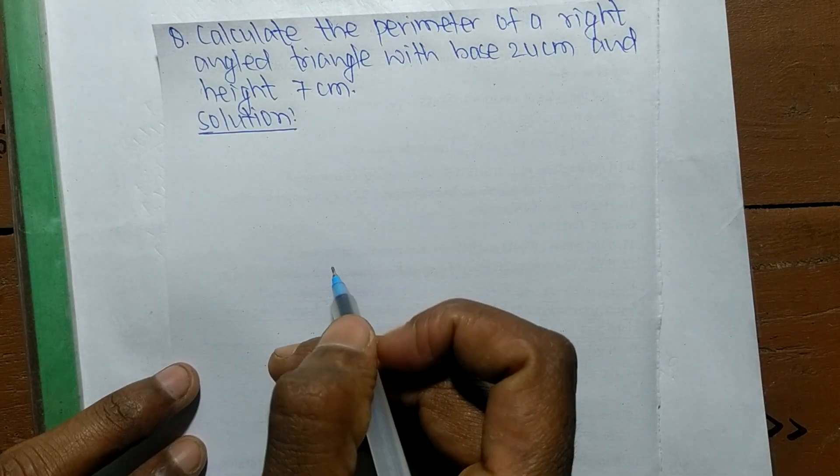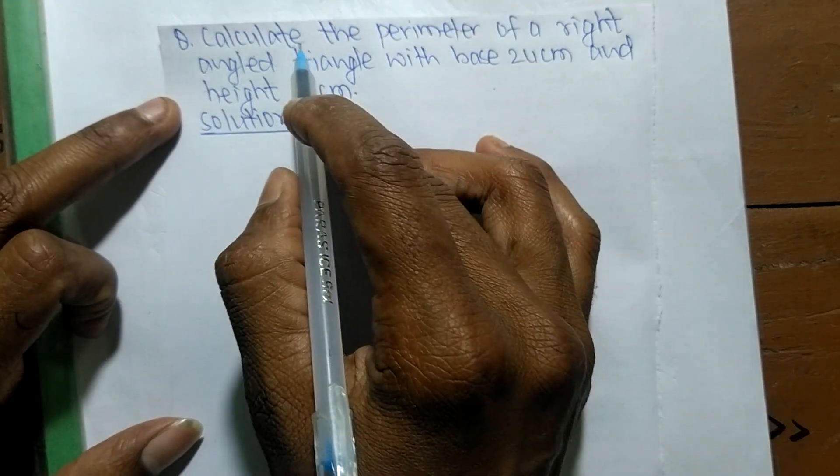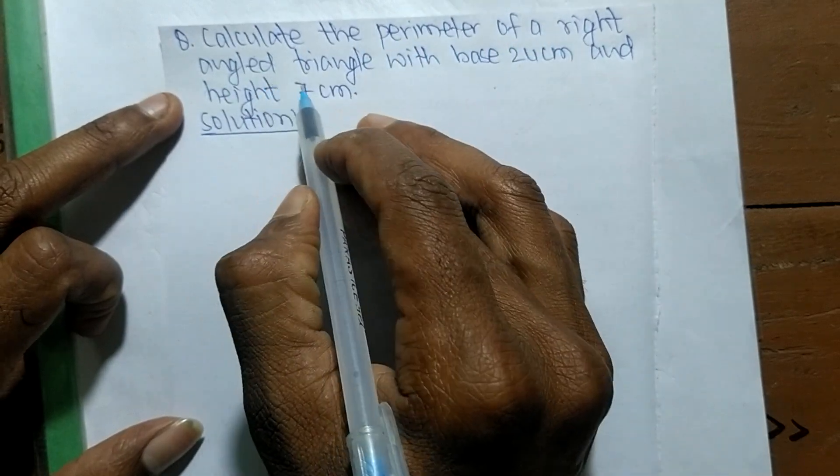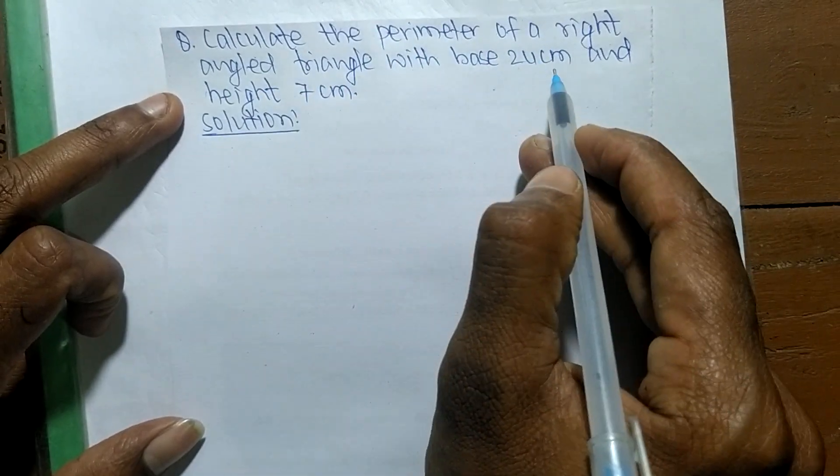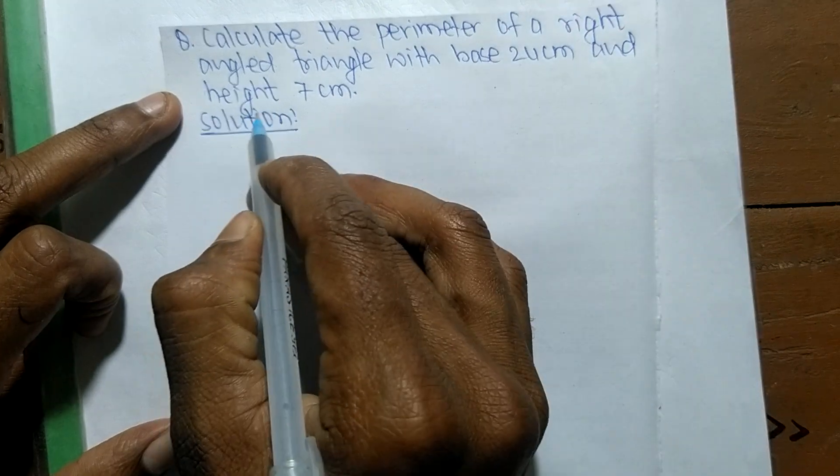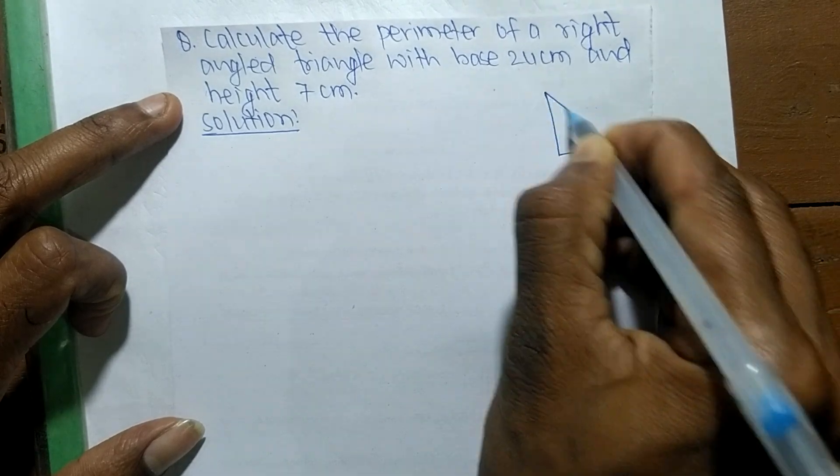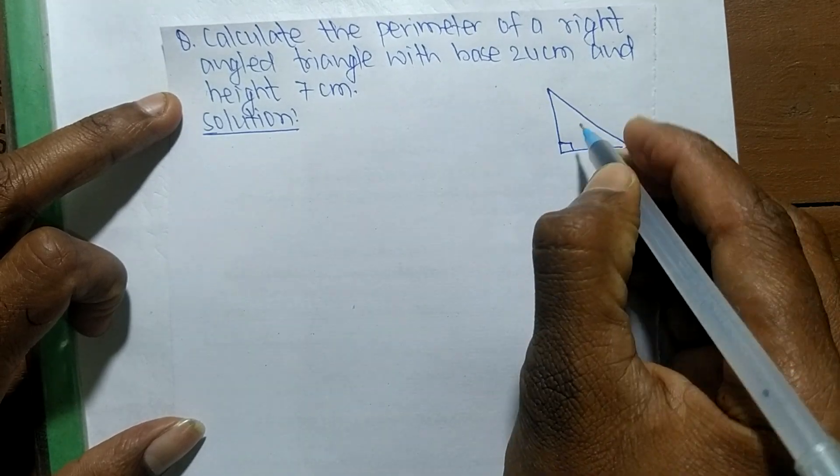Today in this video we shall learn to solve this problem: Calculate the perimeter of a right-angled triangle with base 24 centimeters and height 7 centimeters. So here we have given a right-angled triangle.